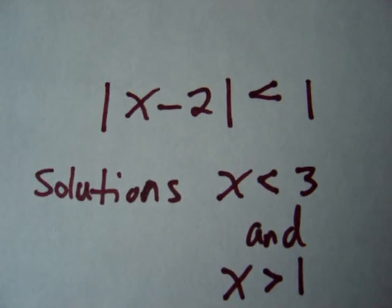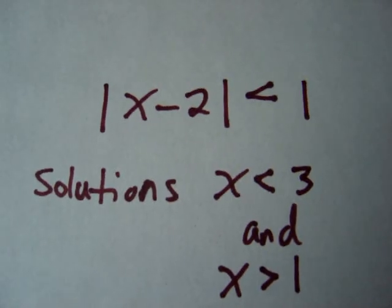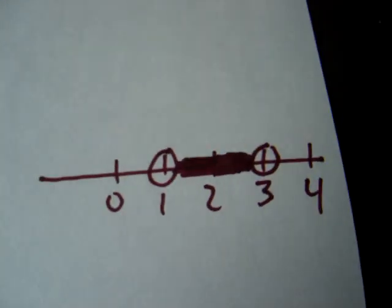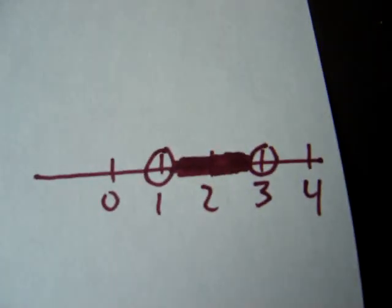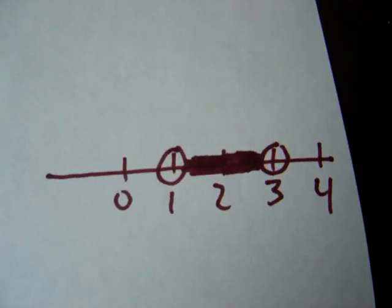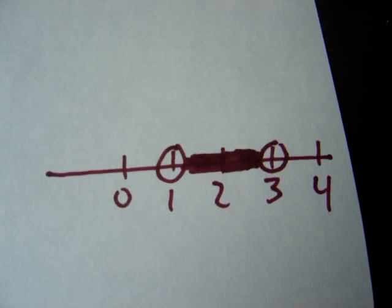So again, on the number line, we're going to see that's the distance from 2 and it's got to be less than 1 on both sides. There is the distance from 2, look, 2 is in the middle, and the distance is less than 1 on each side, so you're between 1 and 3.